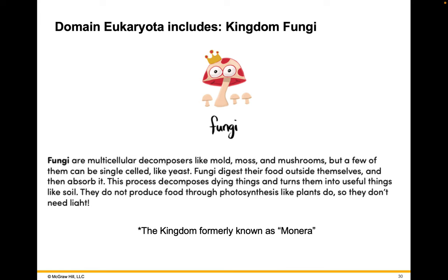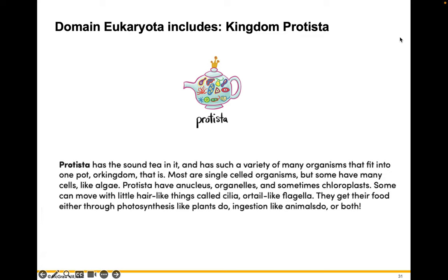Domain Eukarya also includes Kingdom Protista, which has such a variety of organisms that it functions as a catch-all kingdom. Most are single-celled organisms, but some have many cells like algae. Protista have a nucleus, organelles, and sometimes chloroplasts. Some can move with hair-like cilia or a tail-like flagella. They get their food either through photosynthesis like plants, by ingestion like animals, or some can do both.